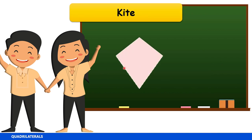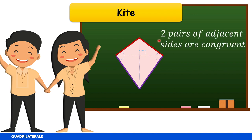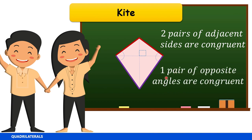A kite is a type of quadrilateral in which two pairs of adjacent or consecutive sides are equal to each other. In this example, these two adjacent sides are congruent, and these other two adjacent sides are also congruent. If we draw the diagonals of a kite, they are perpendicular — they form right angles. Additionally, one pair of opposite angles in a kite are congruent. So in a kite, two pairs of adjacent sides are congruent and there is only one pair of congruent opposite angles.